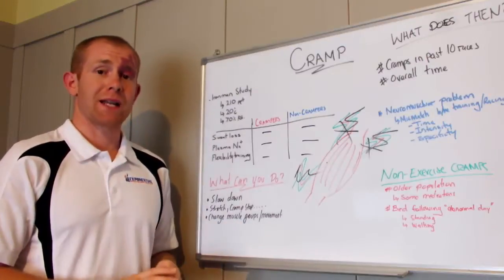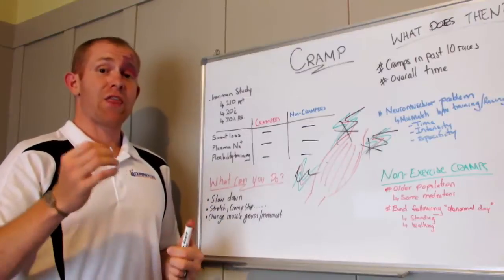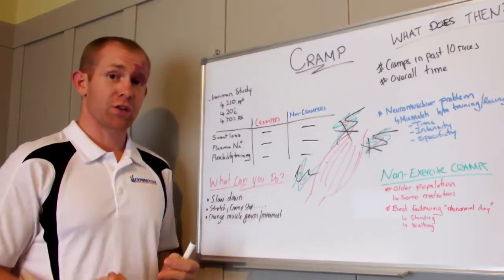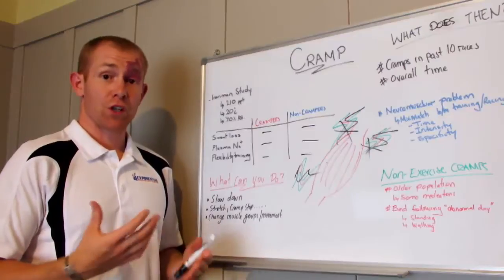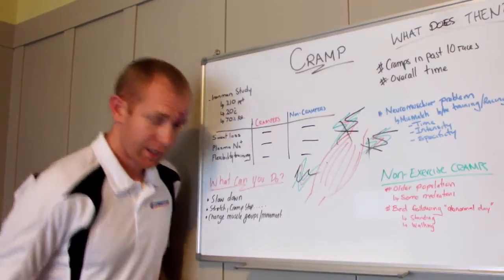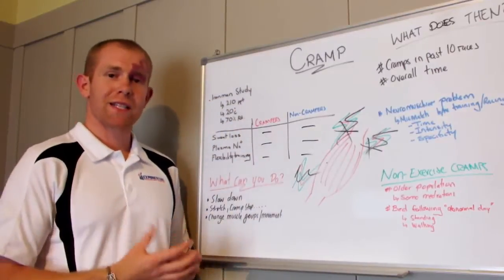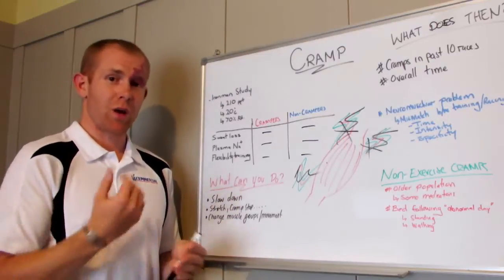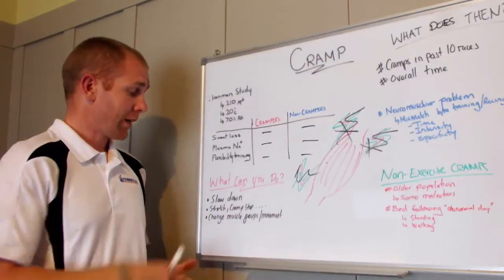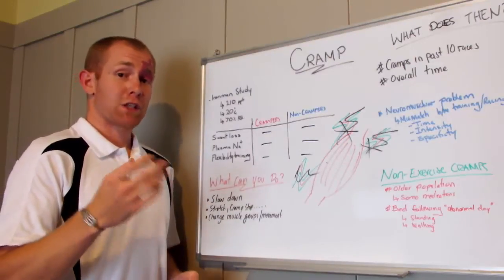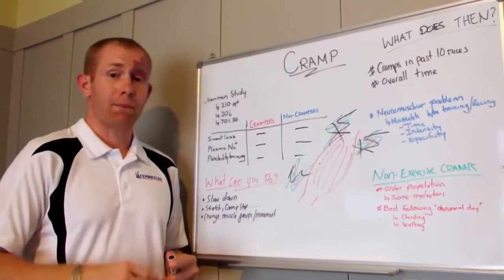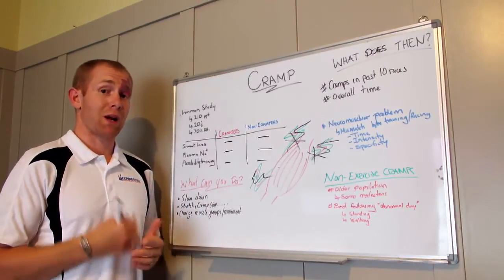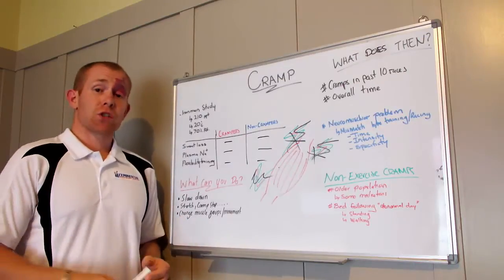What about stretching? What about cramp stop that you can spray under your tongue? Those things are great in that they make you slow down. If you're on your bike and you're starting to cramp through the legs, then doing some stretching is going to slow your intensity. Cramp stop, the mere physical task of getting it out of your bag or back pocket, having to slow down, change up your movement pattern is probably the thing easing the cramp symptoms rather than the cramp stop itself.